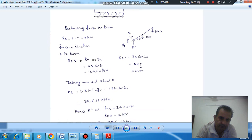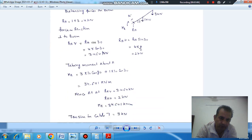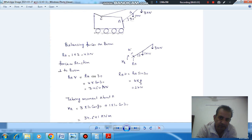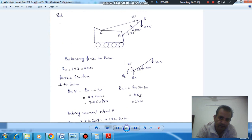So MR will be 34.641 kN·m, RA perpendicular is 3.464 kN, and RA parallel is 2 kN. The tension in the cable is 3.464 kN.